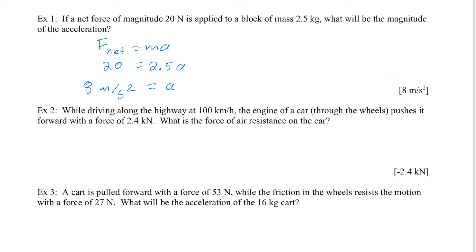A car is driving along the highway at 100 kilometers per hour, and the engine of the car through the wheels, through what we'll see later called static friction of the wheels, pushes it forward with a force of 2.4 kilonewtons. 2.4 kilonewtons is 2,400 newtons. We're going to want to change that to 2,400 because we have to use standard units. What is the force of air resistance on the car? Wait a minute. We don't even have to do any calculations.